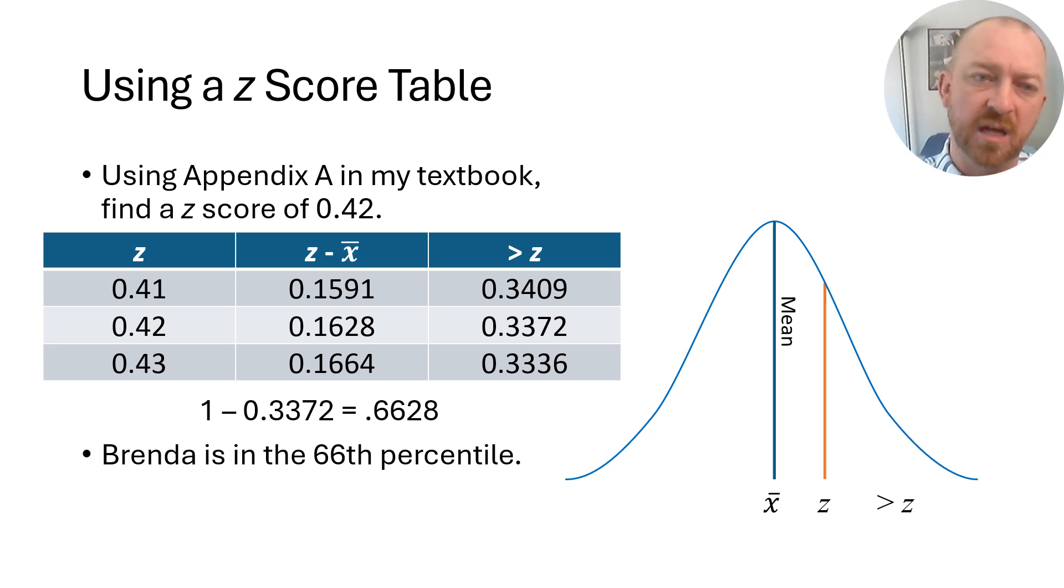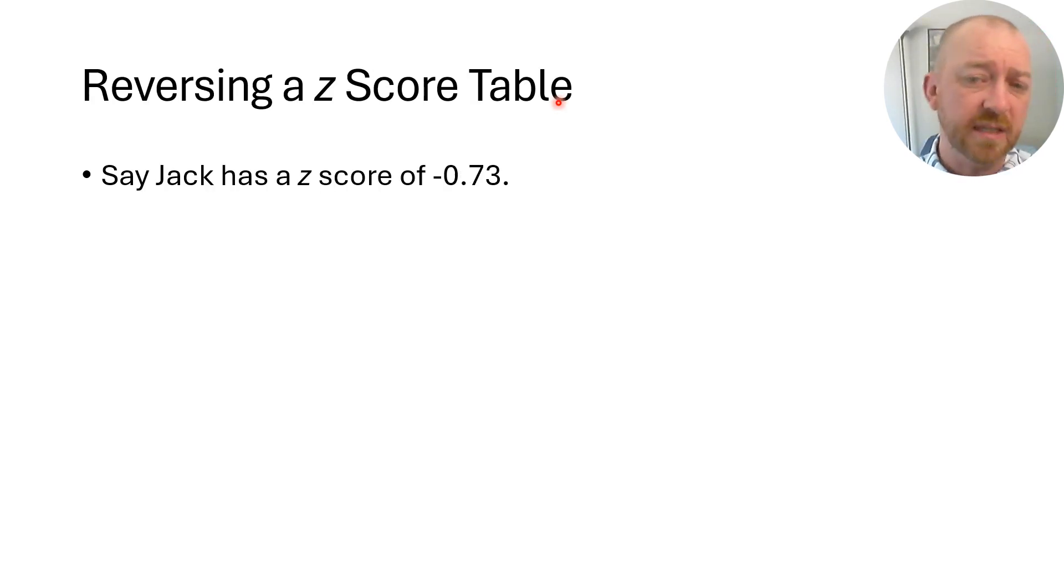Now let's try a negative z-score. It gets a little tricky when we're doing negative z-scores. It's really not that difficult, but what we do need to do is reverse the table in our minds just a little bit, or reverse the graph in our minds. Let's say that there's a guy named Jack, he wants to see the same kind of thing. Let's imagine that it's height. We converted Jack's height into a z-score, and his z-score is negative 0.73.